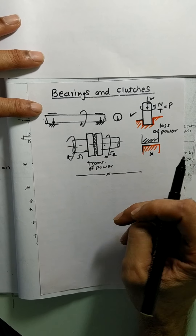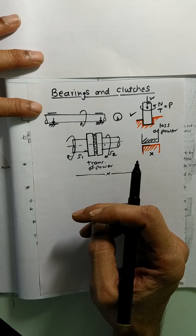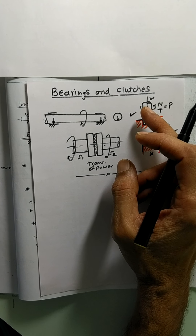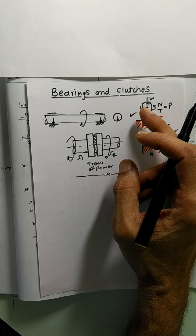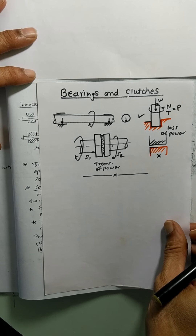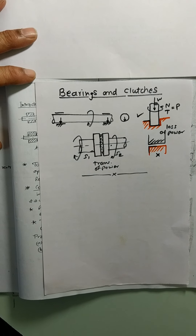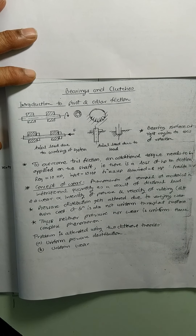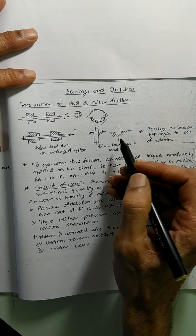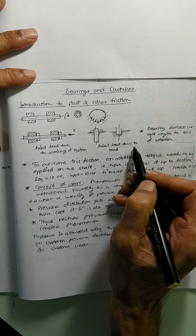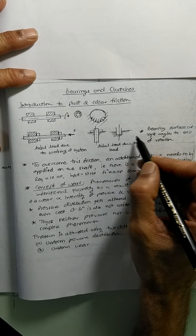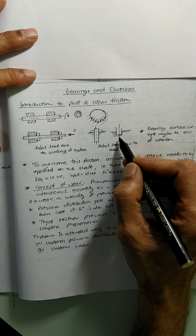There are some derivations and calculations in this topic, and we are going to learn it using different presentations. Introduction to pivot and collar friction: as discussed earlier, this is the axial load, and because of this axial load there is a power loss which is going to take place. The bearing surface is at right angles to the axis of rotation. For overcoming friction, we have to supply some more power — an additional torque is needed to be applied on the shaft, meaning there is a loss of power due to friction.